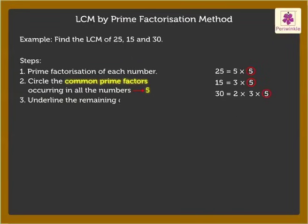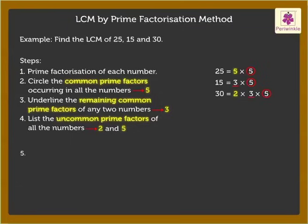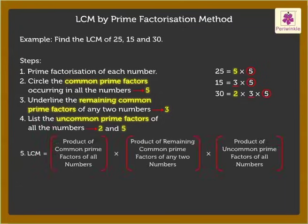Step 3: Underline the Remaining Common Prime Factors of any two numbers. Here we get the Remaining Common Factor as 3. Step 4: List the Uncommon Prime Factors of all the numbers. The Uncommon Factors are 2 and 5. Step 5: The L.C.M. is the product of the Common Prime Factors of all the numbers, the Remaining Common Prime Factors of any two numbers,